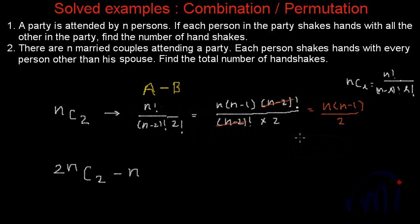This result — n times (n minus 1) divided by 2 — is the nth triangular number. If you want to understand more about triangular numbers or polygonal numbers, you can search for the videos in the channel.